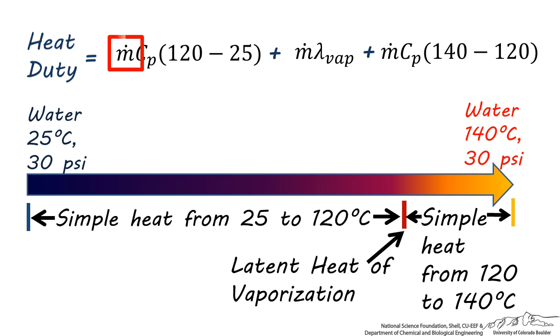M dot is the flow rate of the process stream, the stream we're trying to heat up or cool down, and so its flow rate is 1 gallon per minute. C sub p is the heat capacity of liquid water, which varies a bit from 25 to 120 degrees centigrade, but I averaged it as 4.2 kilojoules per kilogram degree Kelvin. 120 minus 25 is the final minus the initial temperature before the phase change.